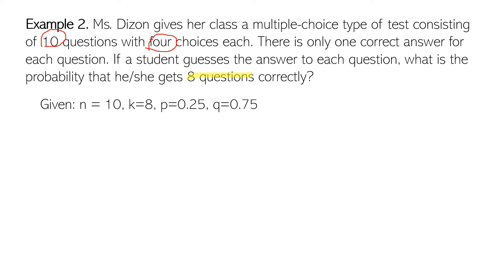We know there are 10 questions, so n equals 10. K equals 8, meaning 8 correct answers. P is 0.25 — because out of 4 choices, only 1 is correct, so 1/4 equals 0.25. Q therefore is 0.75, which is the probability of failure.